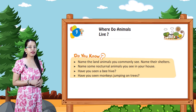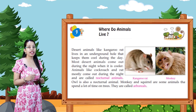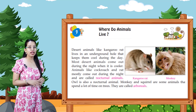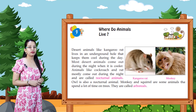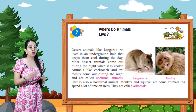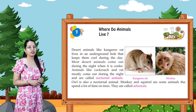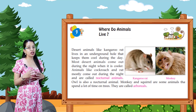Have you seen a beehive? Have you seen monkeys jumping on trees? Desert animals like the kangaroo rat live in underground holes that keep them cool during the day. Most desert animals come out during the night when it is cooler. Animals like cockroach and rat mostly come out during the night. The night owl is also a nocturnal animal. Monkeys and squirrels spend a lot of time on trees — they are called arboreal animals.